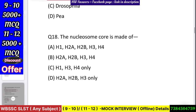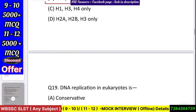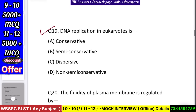Question number 19: The nucleosome core is made of H2A, H2B, H3, and H4. Question number 20: DNA replication in eukaryotes is — conservative, semi-conservative, dispersive, or non-semi-conservative? Answer: semi-conservative.